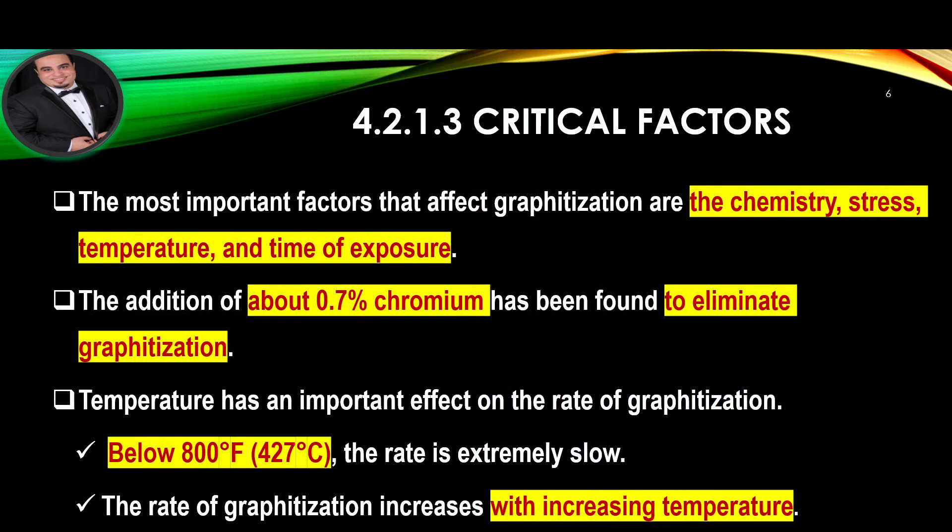Critical Factors: The most important factors that affect graphitization are chemistry, stress, temperature, and time of exposure. The addition of about 0.7% chromium has been found to eliminate graphitization. Temperature has an important effect on the rate of graphitization — below 800°F (427°C), the rate is extremely slow, and the rate increases with increasing temperature.